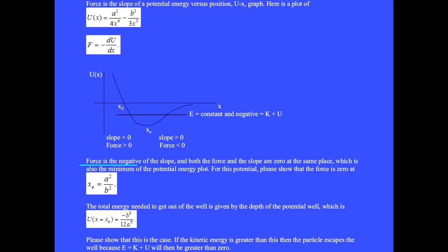Force is the negative of the slope and both the force and the slope are zero at the same place, which is also the minimum of the potential energy plot. For this potential, please show that the force is zero at xe equals a squared over b squared.